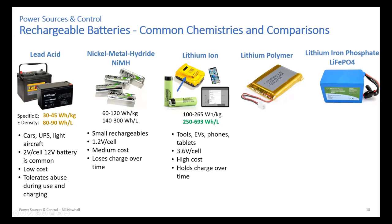Lithium ion batteries are really known for high energy density and high energy capacity. They're generally pretty high cost compared to other batteries, but they do hold charge over time. Lithium polymer batteries use lithium ion technology but have a gel polymer electrolyte instead of a liquid electrolyte, which allows them to be made into low-profile shapes.